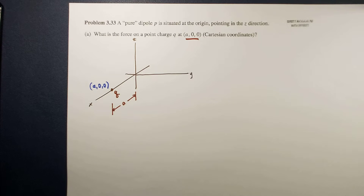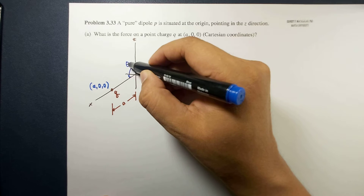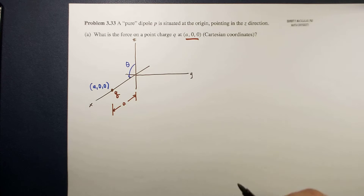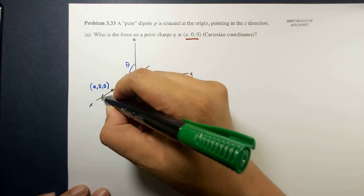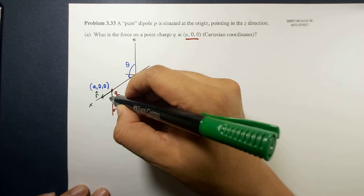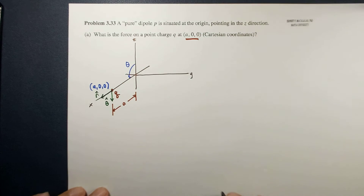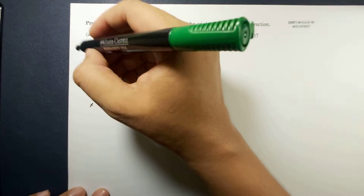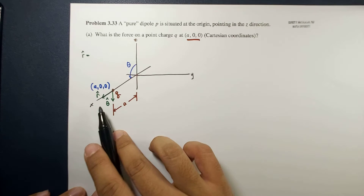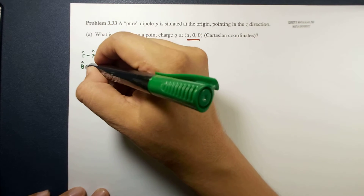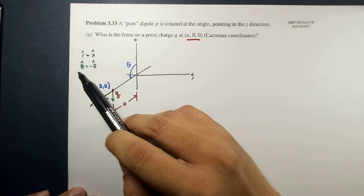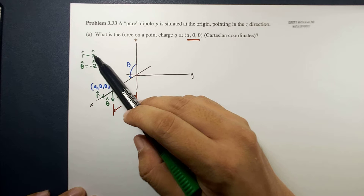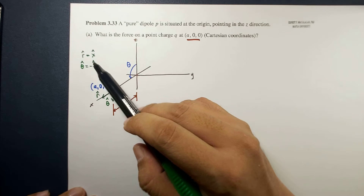In the spherical coordinate system, we know that this is your theta. At this point, the unit vectors r-hat and theta-hat are directed as follows: r-hat is equal to x-hat, while theta-hat is equal to negative z-hat. So r-hat and theta-hat are two of the three coordinates of the spherical coordinate system, while x-hat and z-hat are your Cartesian unit vectors.